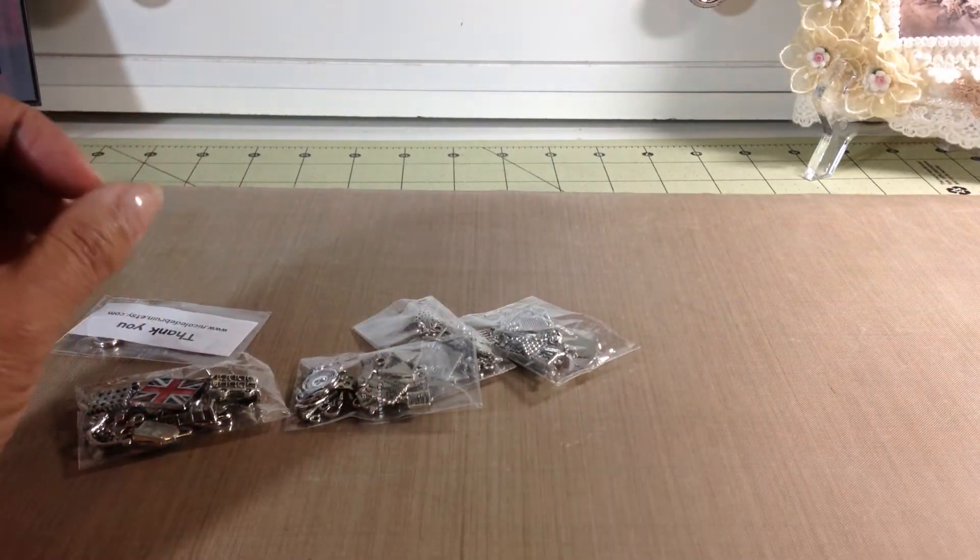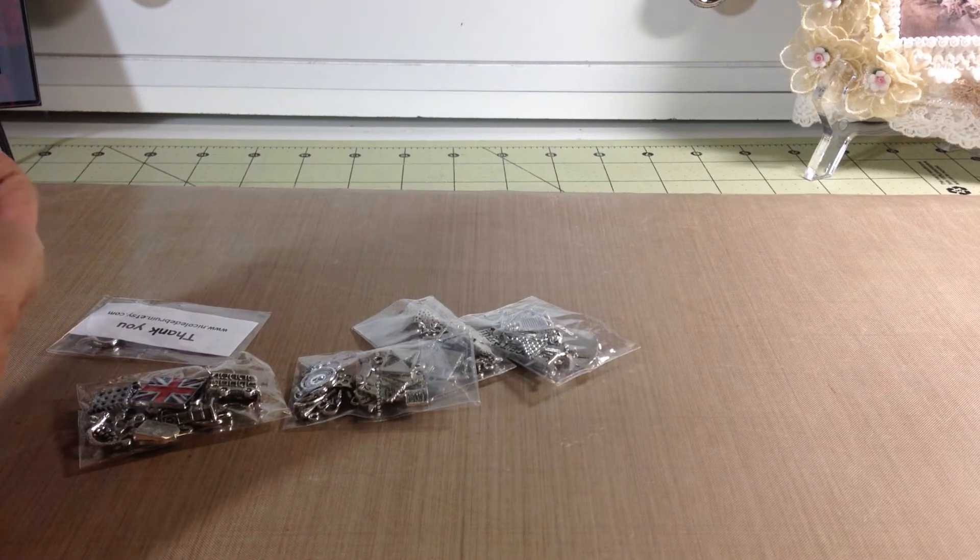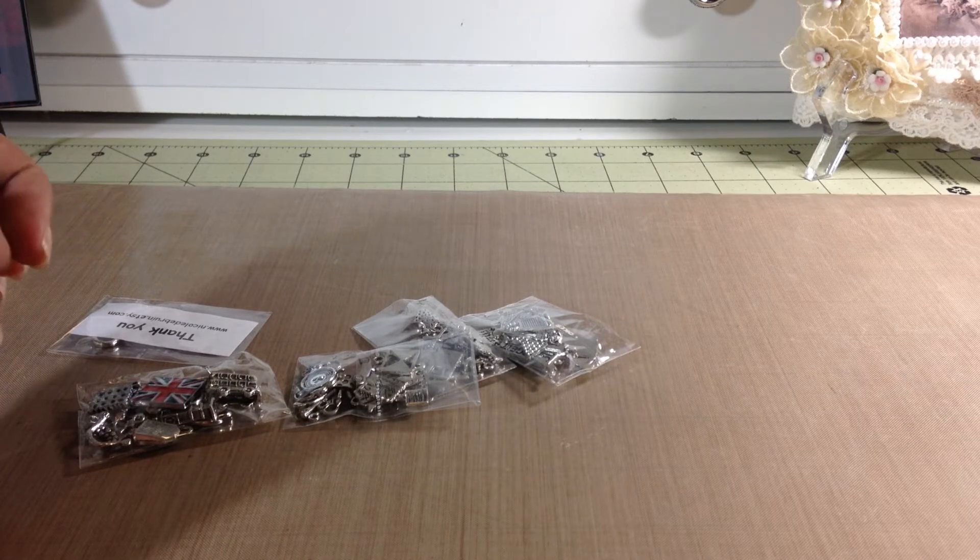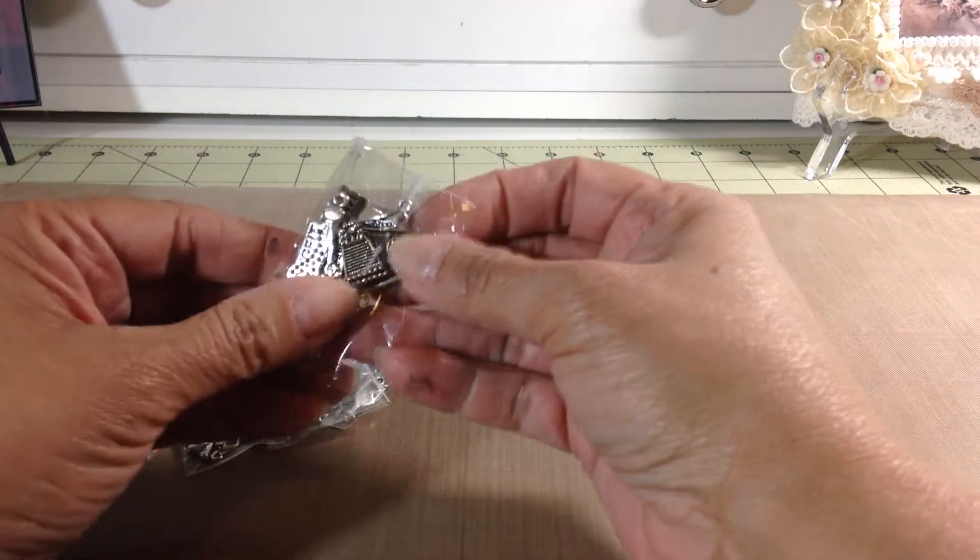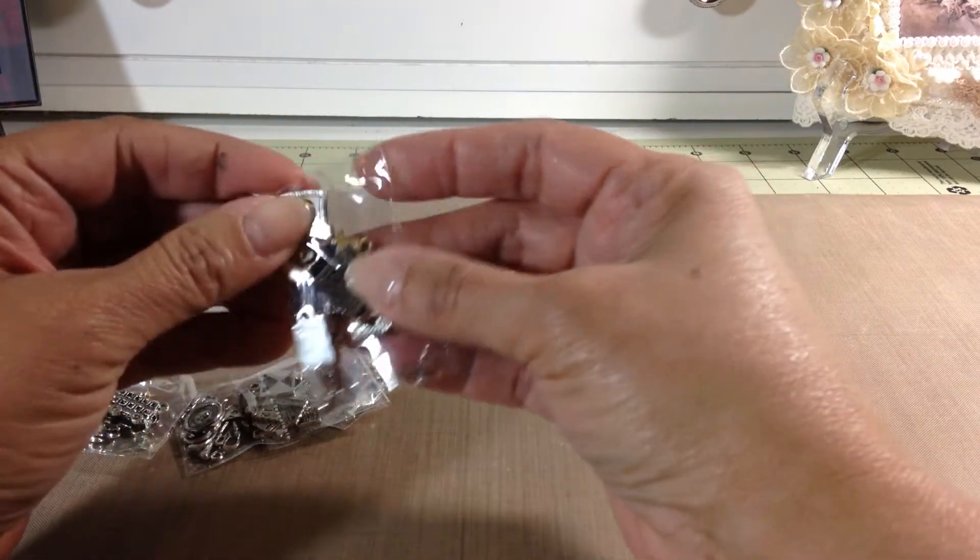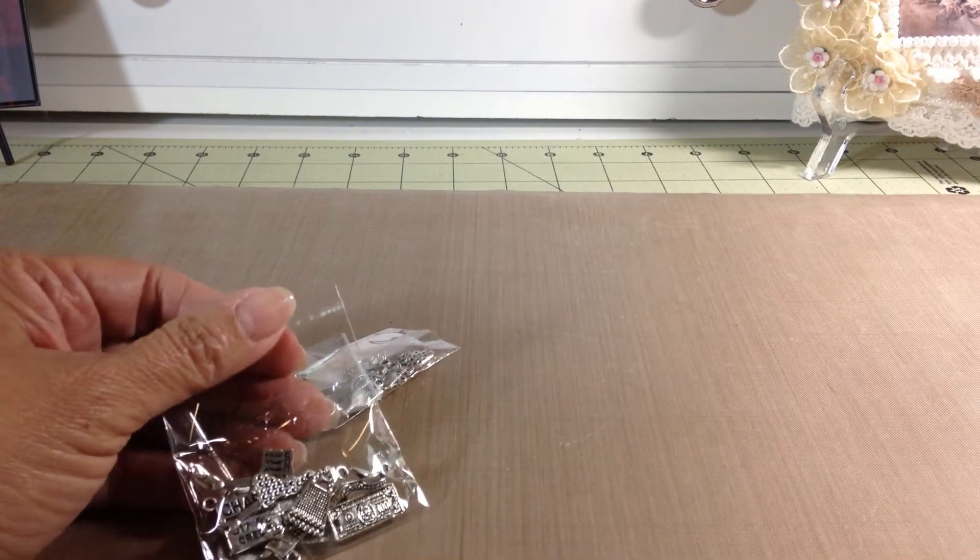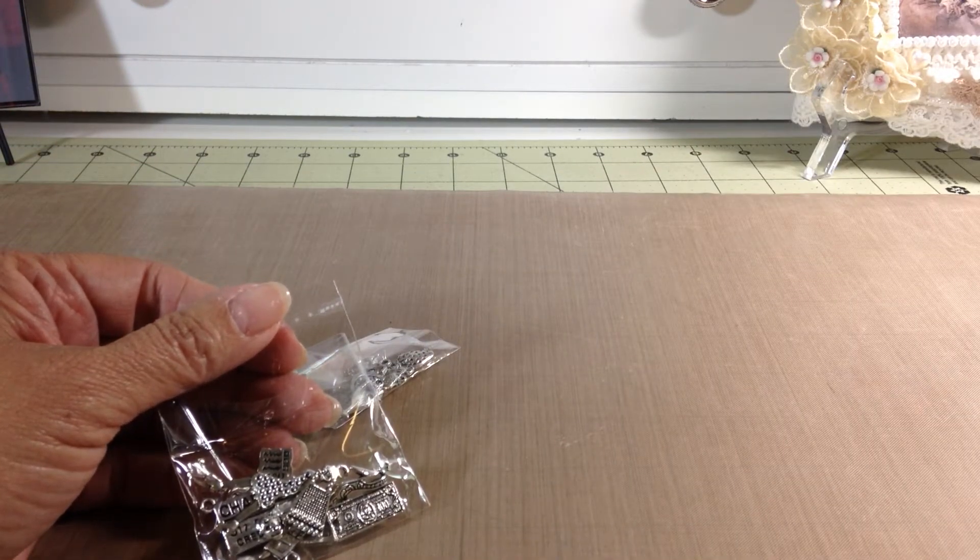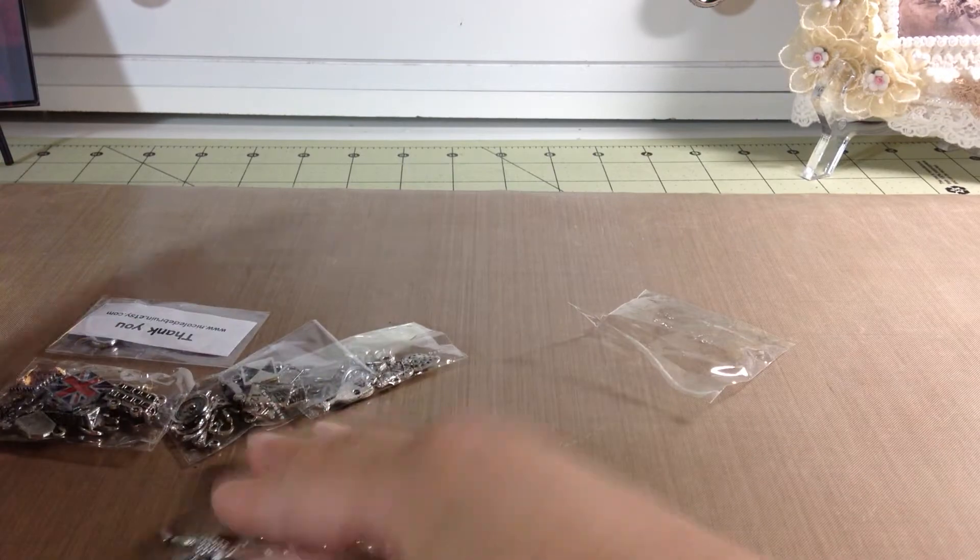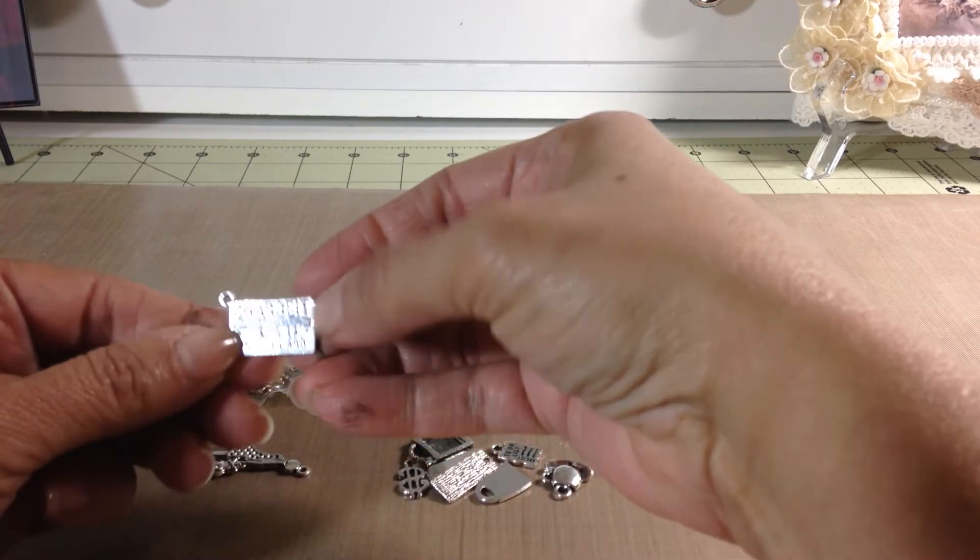And these I purchased from Nicole DeBruin. I believe she's from the UK, Royal Mail. But they came really quick. I got them really quick. And she has a nice website. I believe is on Etsy. I will put her information below for you. But she has pages and pages of charms. And over here, you'll see.